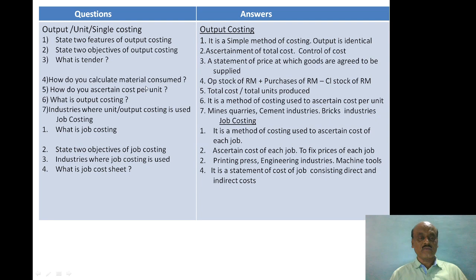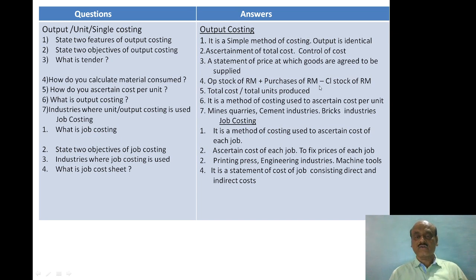How do you calculate material consumption? The formula using a cost sheet is: Opening stock of raw material plus purchases of raw material minus closing stock of raw material equals material consumed.